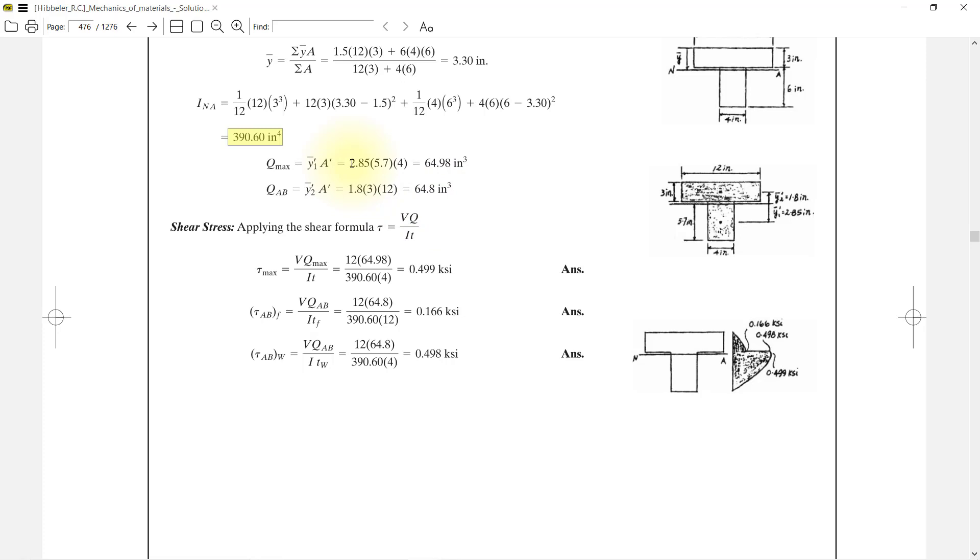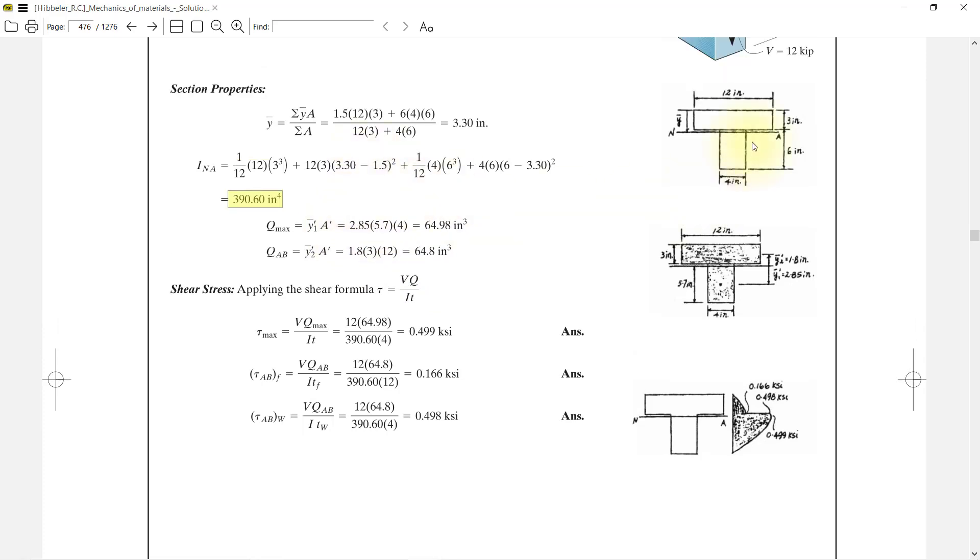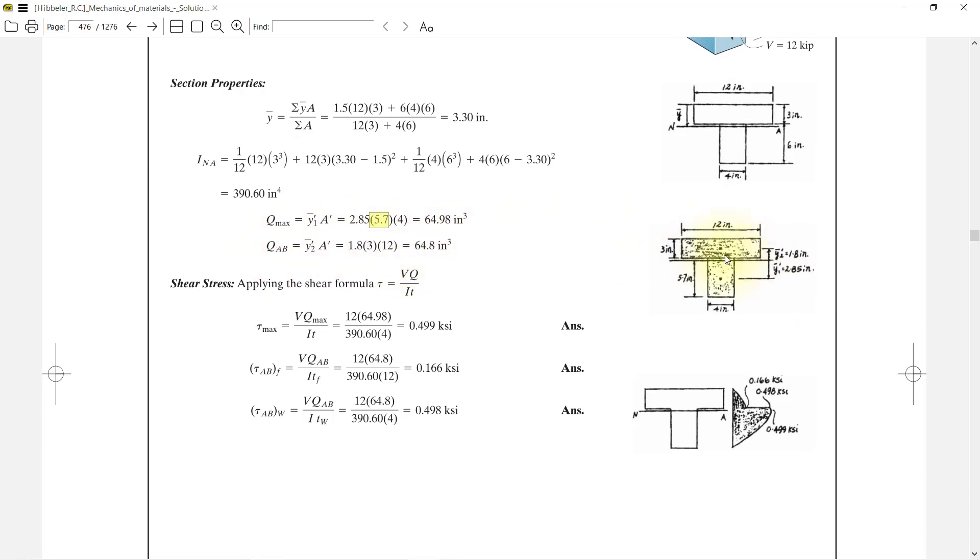So 6 plus 9 minus 3.3 is 5.7. Multiply by 4 inch, and 5.7 divided by 2 is 2.85 as the middle distance. This gives us 64.98 in³. Same thing we will find Q_ab. It is 3 multiply by 12, and this distance up to here is 1.5 plus 0.3, so 1.8 inch.